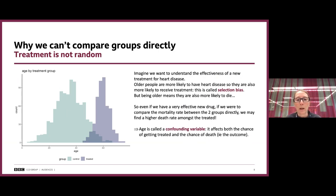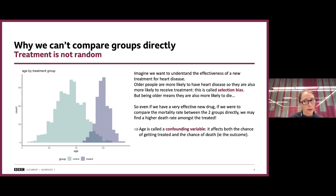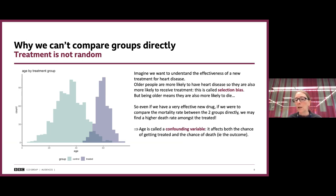So why can't we just compare the treated and the control group directly? In a fake example, imagine we're plotting the age distribution between treated and control groups to understand the effectiveness of a new treatment for heart disease. Older people are more likely to have heart disease, so they are also more likely to receive the treatment — that's what we call selection bias. Being older also means they are more likely to die, so even if our new treatment is very effective, you might find a higher mortality rate in the treated group.